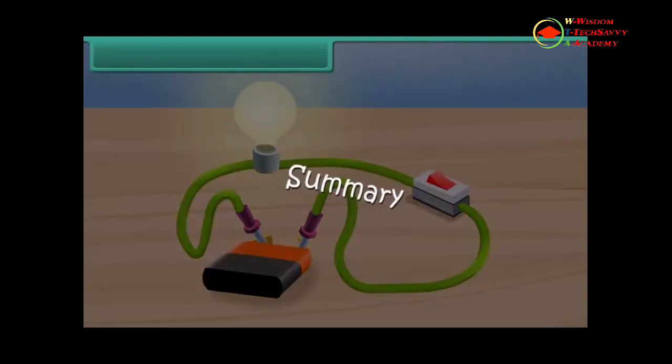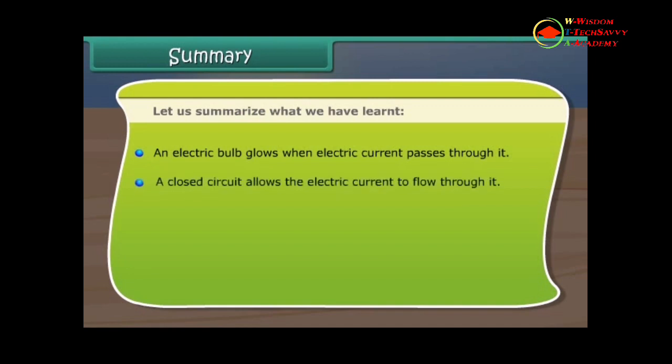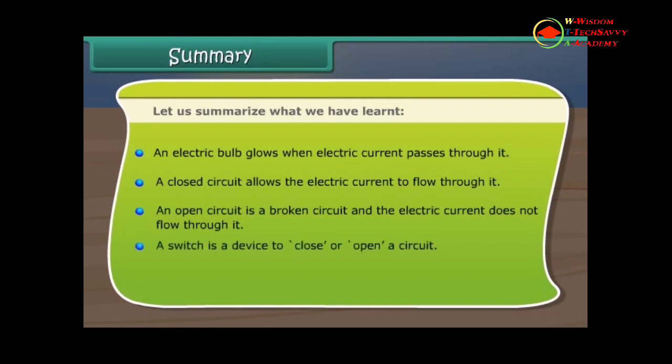Summary. Let us summarize what we have learned. An electric bulb glows when electric current passes through it. A closed circuit allows the electric current to flow through it. An open circuit is a broken circuit and the electric current does not flow through it. A switch is a device to close or open a circuit.